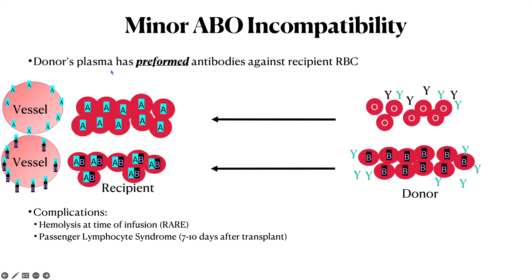Minor ABO incompatibility is when the donor's plasma has preformed antibodies against recipient red blood cells. For instance, an O donor who has anti-A in addition to anti-B — the anti-A will target the A red blood cells. It's important to recognize this is minor ABO incompatibility because those preformed antibodies attack the A red blood cells, but there's a kind of dilution effect: the antibodies don't solely attack the red blood cells because there are other A antigens elsewhere, like on the vessels. So hemolysis at the time of infusion is rare for minor ABO incompatibility. For example, a B donor with anti-A is going to target the A antigen on an AB recipient's cells, but also the A antigen on the vessels as well.